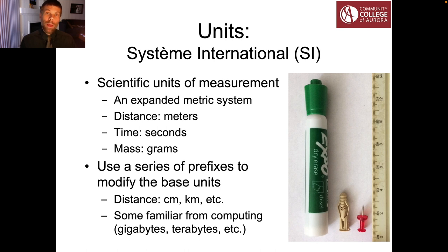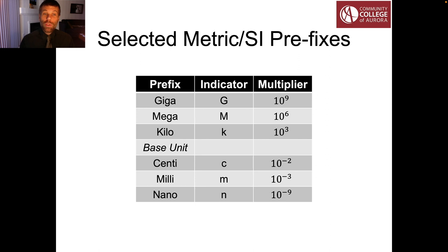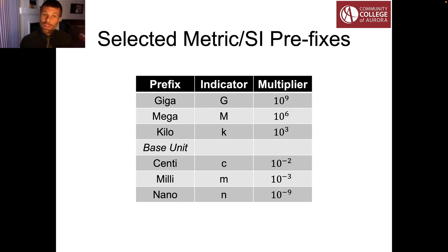It's a lot more sensible to talk about the distance from, say, Aurora to Colorado Springs in terms of kilometers than in terms of meters. Meters are relatively short — good for measuring distances across a house or along a football field — but not great for measuring distances between cities, which are generally many thousands of meters apart. These derived units using predefined prefixes allow us to work at the scale that makes the most sense. On the slide here, I've presented a table with some of the most important prefixes relevant to astronomy.